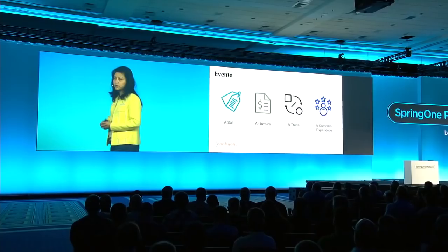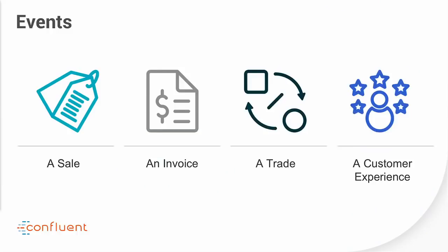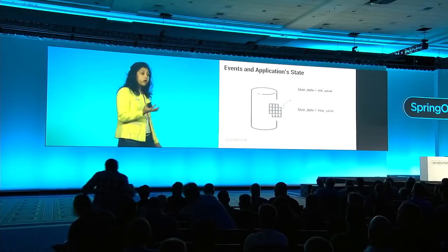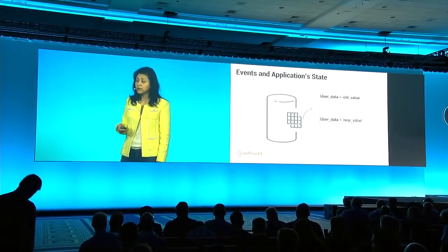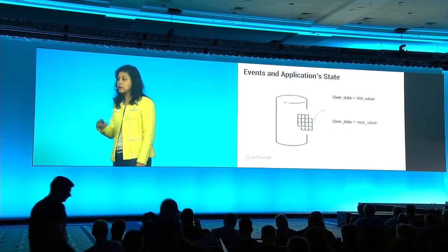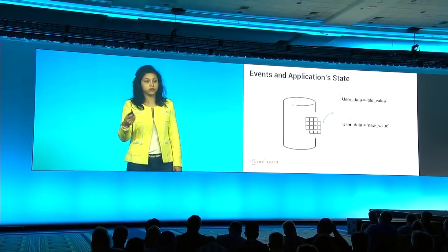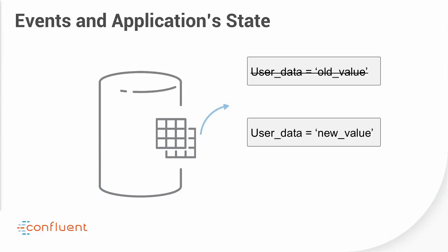Events don't just occur in retail — they occur everywhere. A sale, an invoice, a trade, some aspect of a customer experience — these are all events. But the world of events is actually much larger than this, and that's why they're so powerful. Events also capture changes in your application state. If your application stores state in a row in a database, and you change that row, that's an event. Going from old value to new value — a change in state — is a very fundamental thing for application development in an event-driven world.